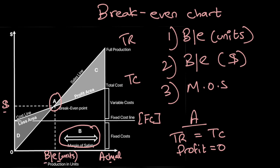Remember, margin of safety is the difference between actual output and the breakeven output. Margin of safety can similarly also be shown on the y-axis. If this is your breakeven in dollar terms — this dotted line — and this is your actual revenue, then margin of safety in dollar terms is the difference between the actual revenue and the breakeven revenue.